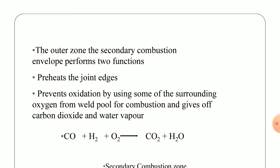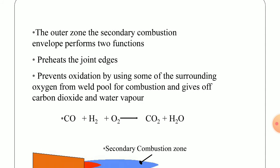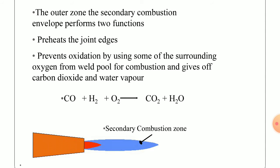The outer zone, or secondary combustion envelope, performs two functions: it preheats the joint edges and prevents oxidation by using some of the surrounding oxygen from the weld pool for combustion, producing carbon dioxide and water vapour. Tremendous heat is generated in the range of 2,500°C and up to 3,500°C in some cases, yet water droplets are still chemically formed.